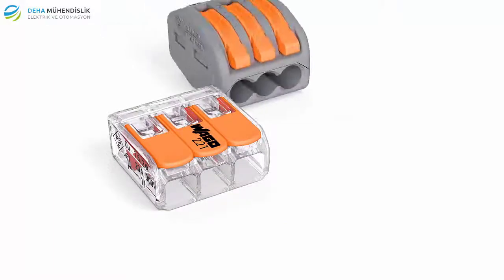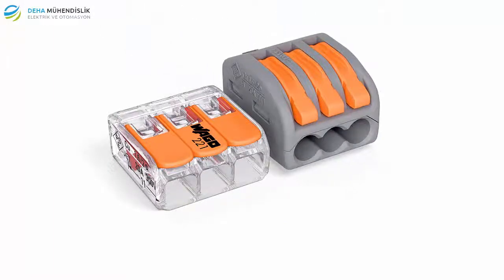Wago's 221 series compact splicing connector for all conductor types saves 40% more space than its predecessor, thanks to a significant reduction in size. This makes connections possible, even in the smallest, most difficult to access installations.